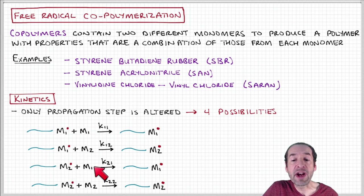Those can add either monomer one to become an active chain with monomer one at the end, or add monomer two to have an active chain with monomer two at the end. In principle, each of these four processes can have its own rate constant.